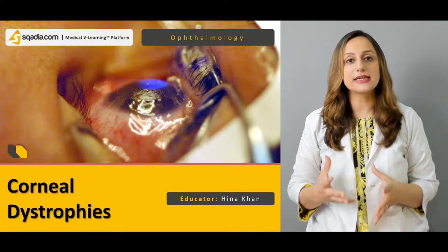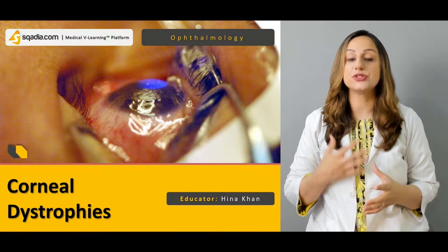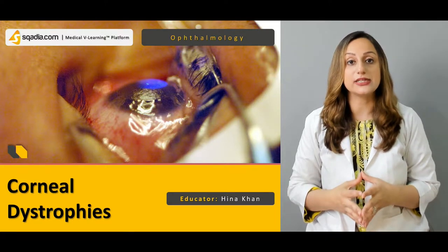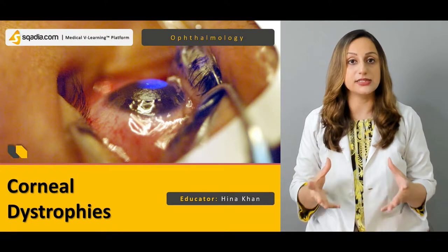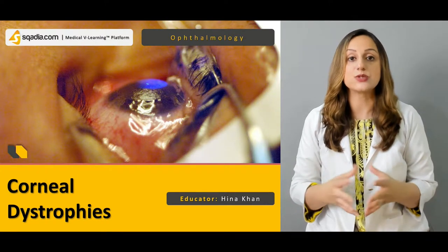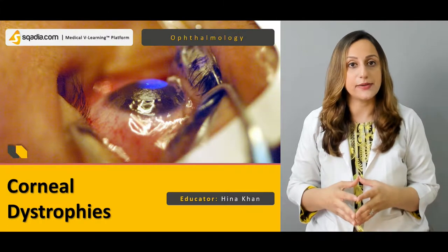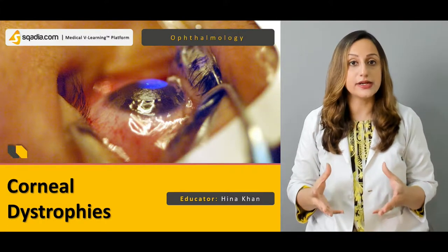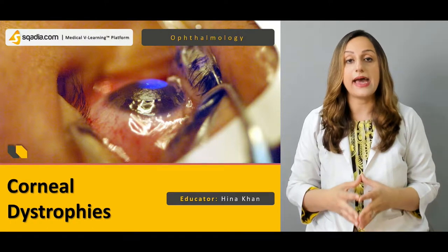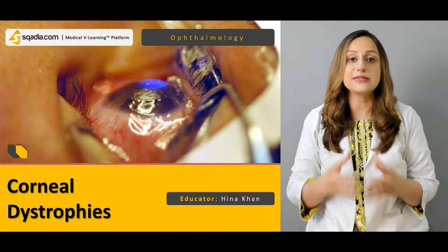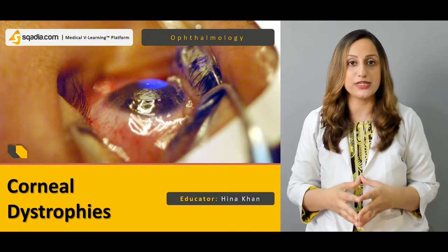When discussing this topic, it relates to genetic abnormalities and congenital mutations that can involve epithelial changes as well as other layers of the cornea — the stromal layer, the internal limiting layer, and also Descemet's membrane — all of which can be involved in these corneal dystrophies.